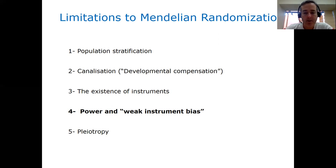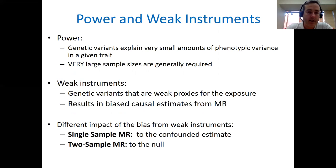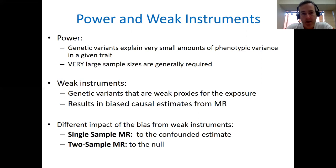So let's talk about the last two limitations — power and weak instrument bias. These are two different but related concepts. Statistical power is basically the probability of demonstrating a causal effect when one is in fact present. Because the genetic variants used in Mendelian randomization analysis only explain very small amounts of phenotypic variance in the exposure, MR analysis has really low power.